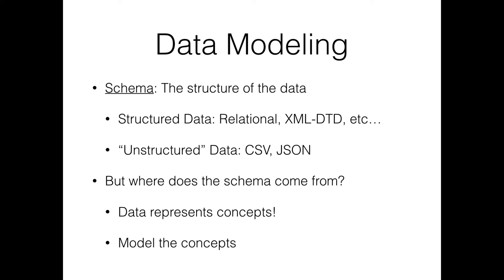How do we decide what should be a relation? Maybe there's some instinctive notion that a student should be represented by rows in a relation, or that officers, ships, or planets might be something you could represent in a relation. But what about things like trips? Or the location of a particular officer — are they on one planet or another? That's something a little harder to think about.